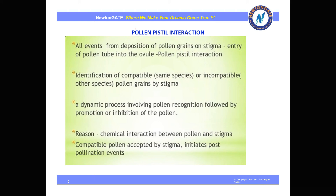Pollen-pistil interaction refers to all events from deposition of pollen grains on the stigma to entry of the pollen tube into the ovule. Identification of compatible or incompatible pollen grains by the stigma is part of this interaction — a dynamic process involving pollen recognition followed by promotion or inhibition of the pollen. Chemical interaction between pollen and stigma takes place, and compatible pollen is accepted by the stigma, initiating post-pollination events.